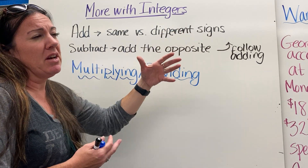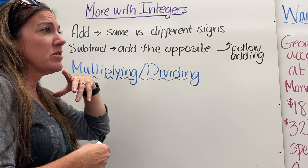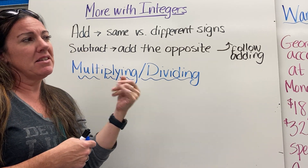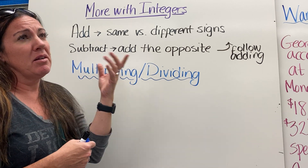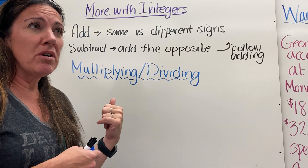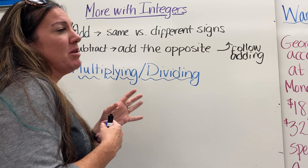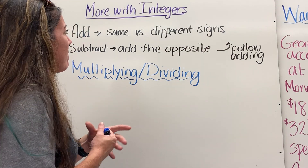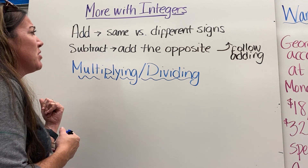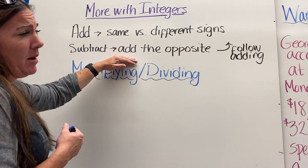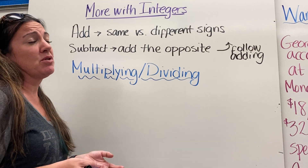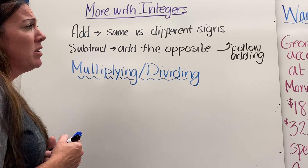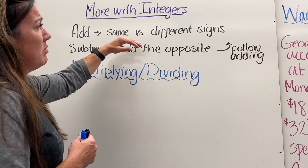If the numbers had different signs, we looked at their absolute values and subtracted them. So for 4 plus negative 8, we think of it as 4 minus something — since the larger absolute value is negative, the answer is negative. Then for subtracting, the first thing we did was add the opposite, changing subtraction problems into addition problems, and then followed the same rules for adding.